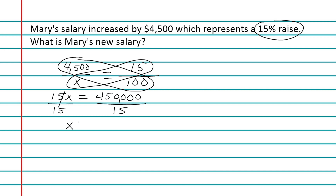15 fits into 45 exactly three times, and this is followed by four zeros, so we write four zeros after the three — giving us 30,000 again. This is the original amount Mary was paid. Remember, her new salary is the original plus the $4,500 raise, which gives a total of $34,500.